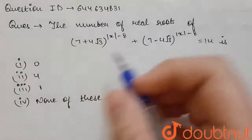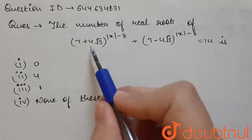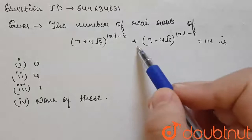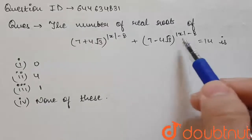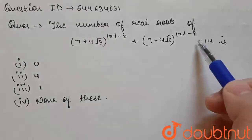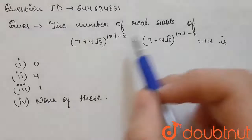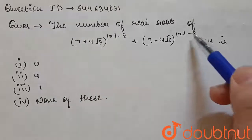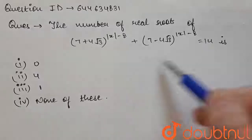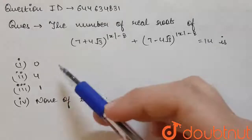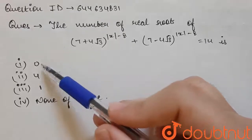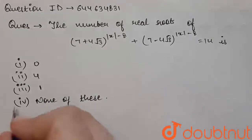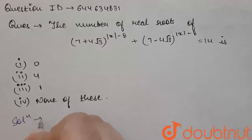Today's question is: find the number of real roots of (7 + 4√3)^|x−8| + (7 − 4√3)^|x−8| = 14. We have to find the number of real roots of this equation. The options given are 0, 4, 1, and none of these.